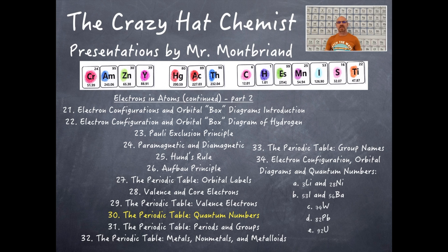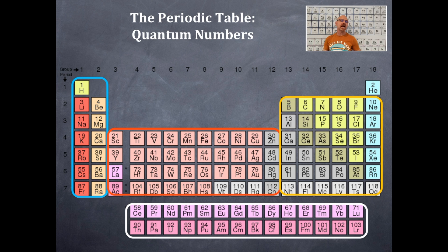Welcome to the Crazy Hack Chemist. Here we go again today — this is the 30th video in electrons and atoms. We have already talked about the periodic table and where different types of orbitals are located, so hopefully you can see on here where those are and remind yourself of their locations.